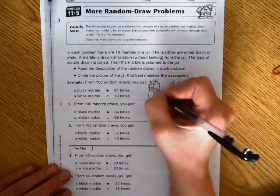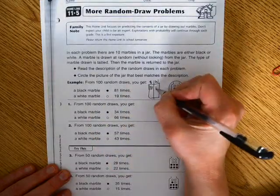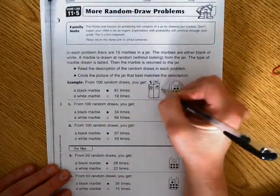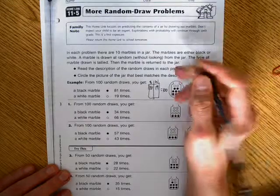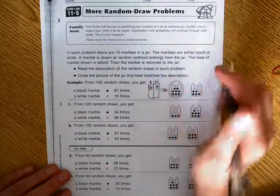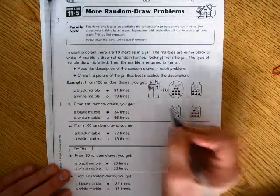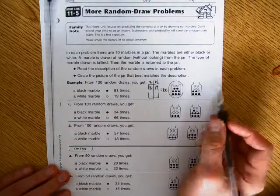And on the black side, we ended up with 81 tallies. And on the white side, we ended up with 19 tallies. So that it would equal 100. Every time they pulled a marble out, they put it back in. So we have to look at these two jars and think, well, which one could it be?